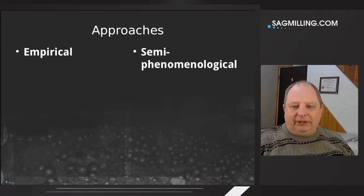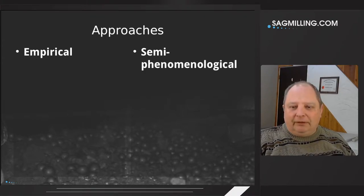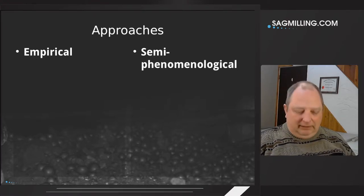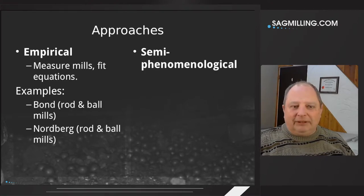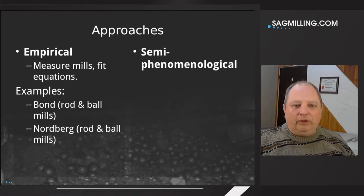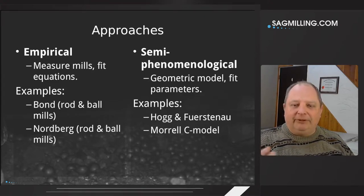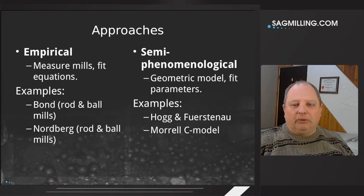There are a couple of ways that we can generate these models. One is a fully empirical method where we take measurements in the field of an operating mill — you read the power draw and some geometric measures thought to be important. Examples of this type are the Bond model for rod and ball mills or the Nordberg model. The semi-phenomenological models are based on some sort of geometry, and you fit parameters observed in the field to that geometry — for example, the Haugen-Furstennau model or the Morrell C model.